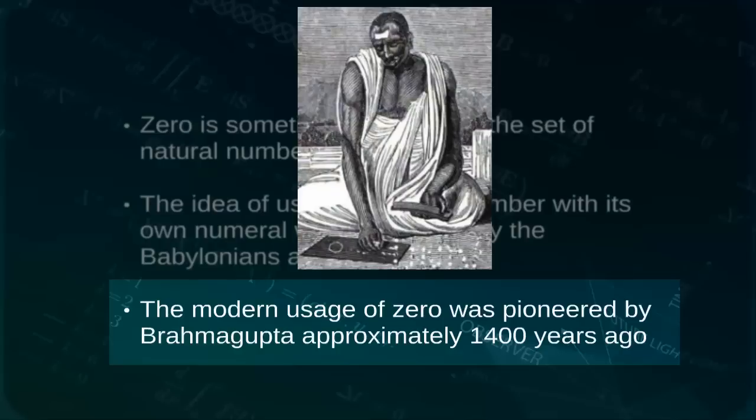Our modern usage of numeral zero was pioneered by the Indian mathematician Brahmagupta, who was the first to develop rules for using zero with positive and negative numbers in conjunction with basic mathematical operations such as addition, subtraction, multiplication, and division.